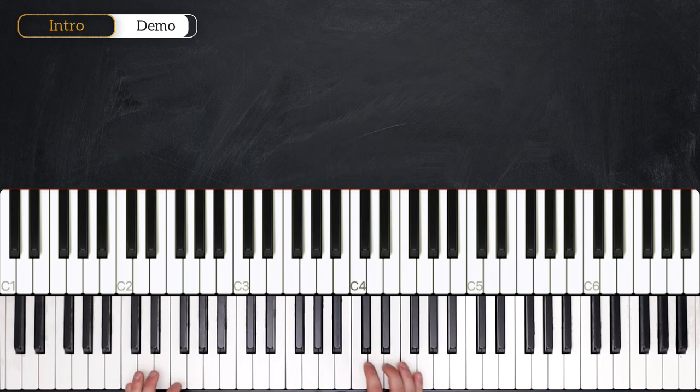Alright, so that is the intro to Friend of Mine. First off, let's dive into the chords that we encounter in this section. So, we're in the key of C major,